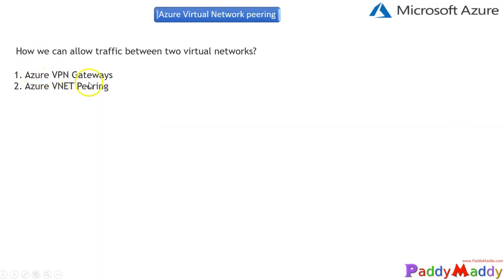Within Microsoft Azure there are two possible options to connect networks. The first one is Azure VPN Gateways, where you configure VPN connectivity from one network to another so that traffic can be routed. This is especially useful when you are trying to enable communication from your on-premises environment to one of the virtual networks.